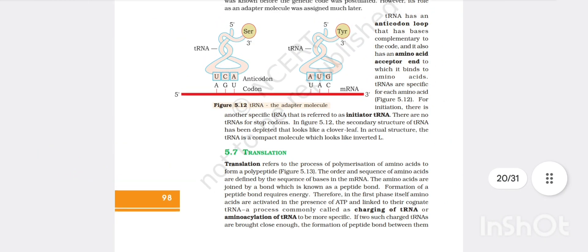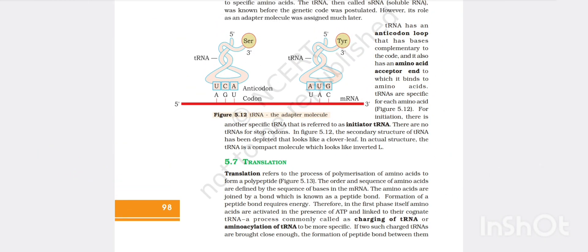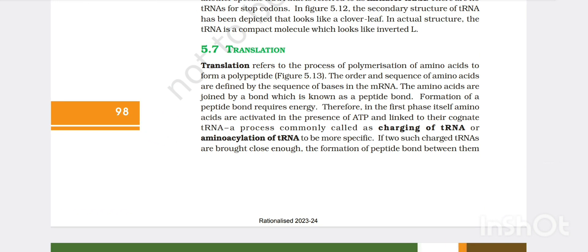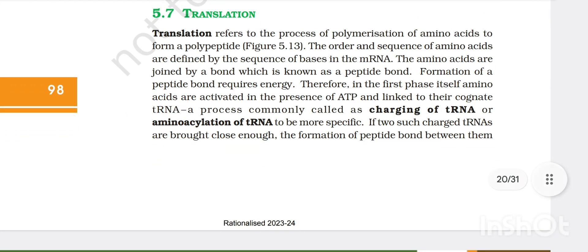For initiation, there is another specific tRNA referred to as initiator tRNA. There is no tRNA for stop codons. In figure 5.12 secondary structure of tRNA has been depicted that looks like a clover leaf. In actual structure, tRNA is a compact molecule which looks like inverted L. Then translation - the process of translation where from the mRNA molecule proteins are formed. The sequence of amino acids are defined by the sequence of bases of mRNA. Amino acids are joined by bond which is known as peptide bond. Amino acids linked with each other to form a protein and they are linked by peptide bond.